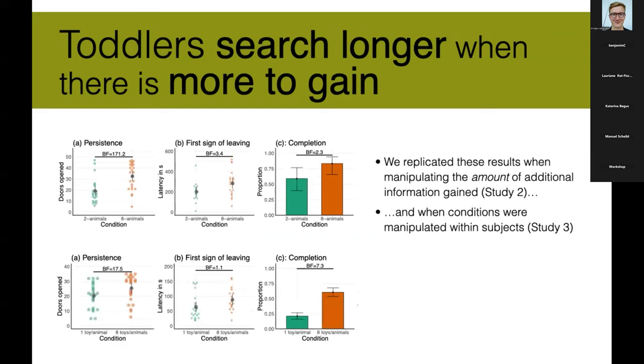We also managed to replicate those results in a third study, in which this time we manipulated conditions within subjects. That was very surprising to us, because we thought children somehow would remember what they'd done before. Obviously, we used two different sets of objects. So once we had the animals, once we had some kind of everyday objects, we had a little bit of a break in between. And still, we managed to elicit the results that we were hoping for.